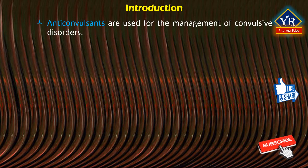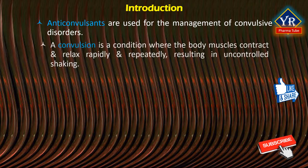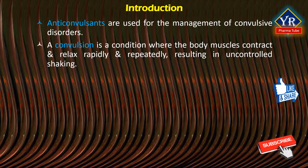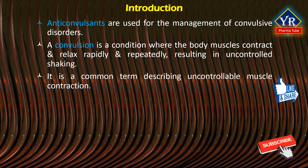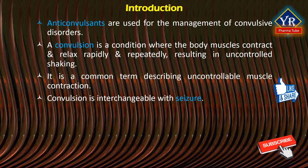Anticonvulsants are the drugs that are used for the management of convulsive disorders. A convulsion is a medical condition where the body muscles contract and relax rapidly and repeatedly, resulting in uncontrolled shaking. Convulsion is a common term generally describing uncontrollable muscle contraction. The word convulsion is often interchangeable with the word seizure, so both words have the same meaning.